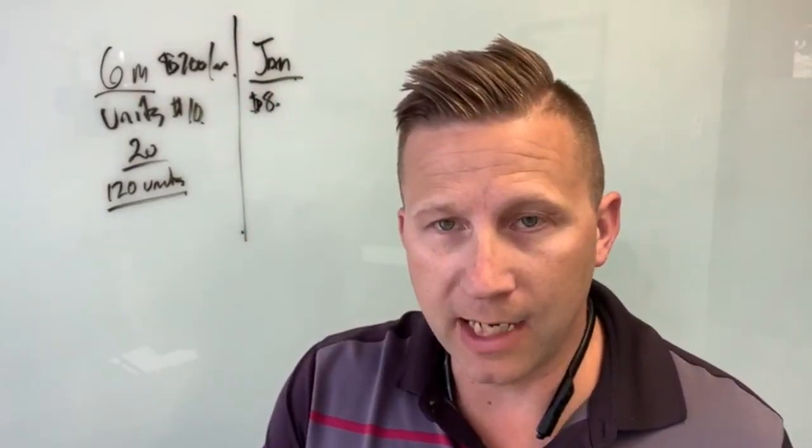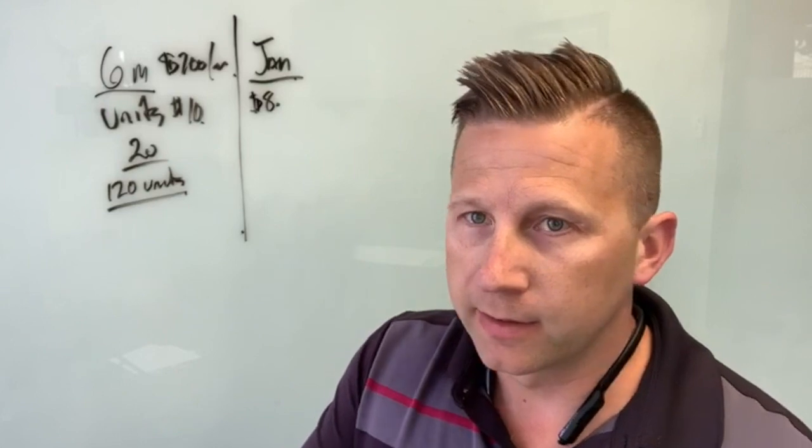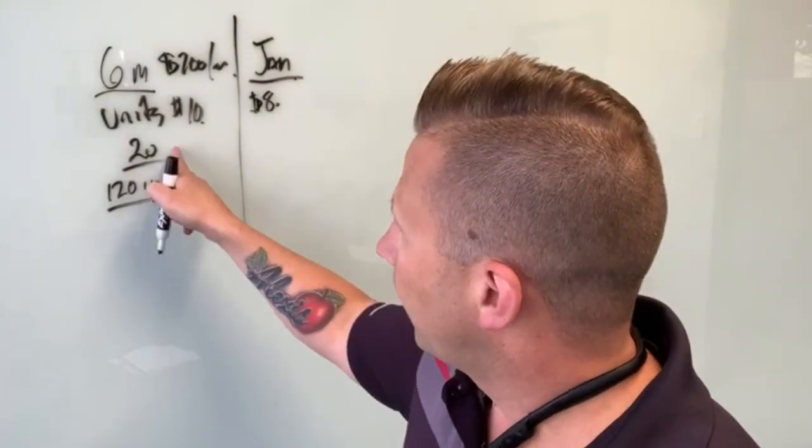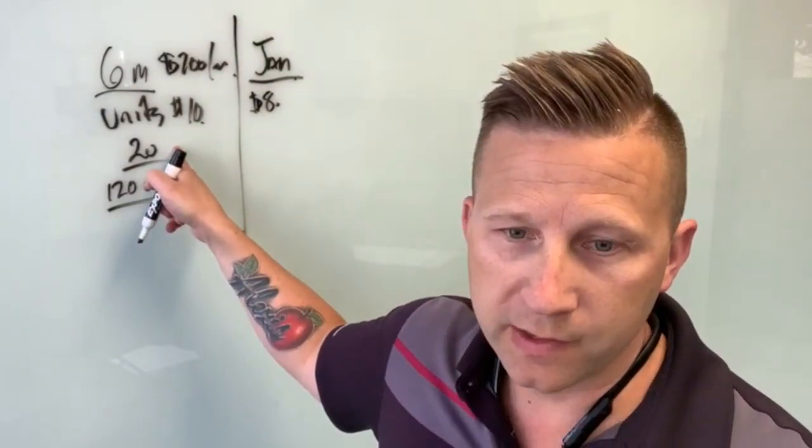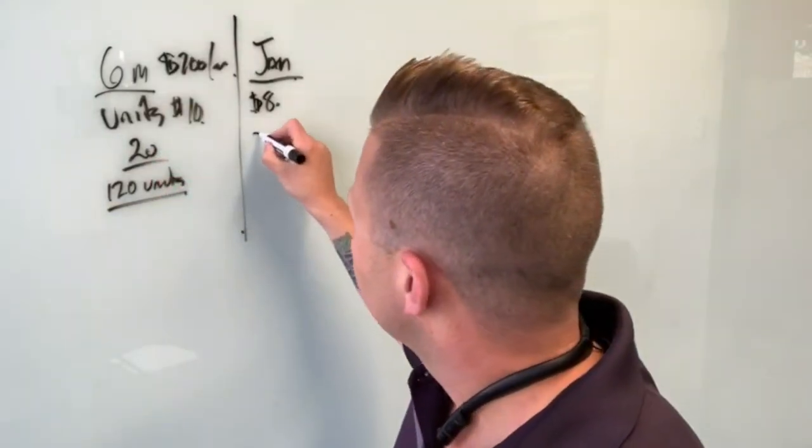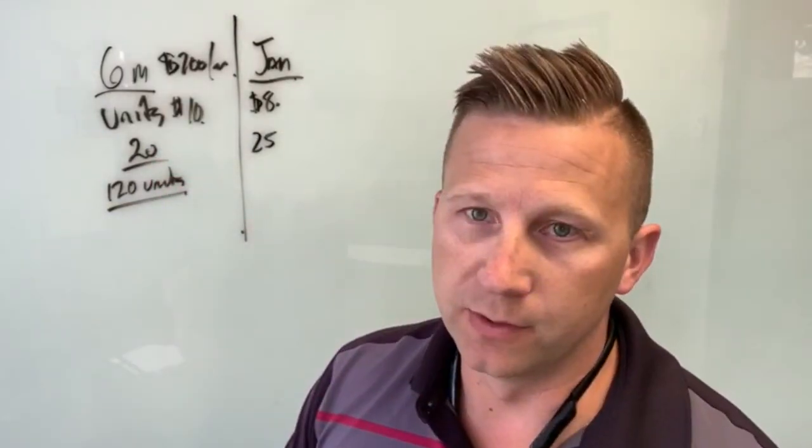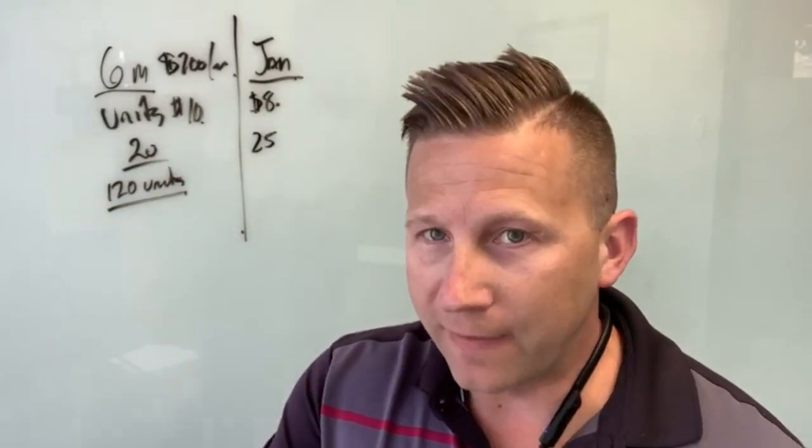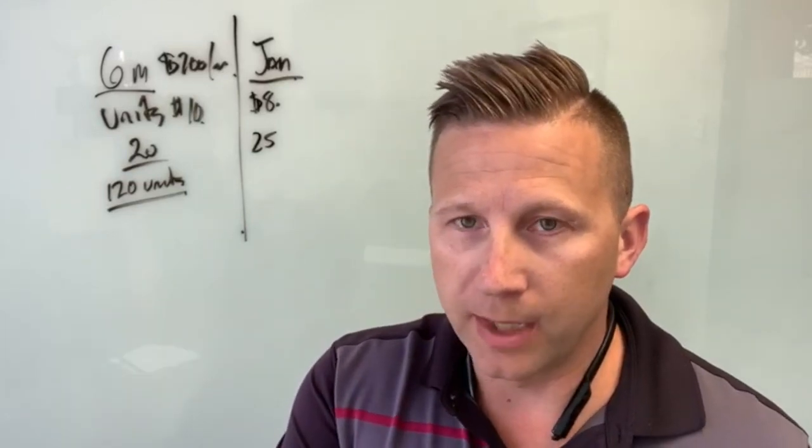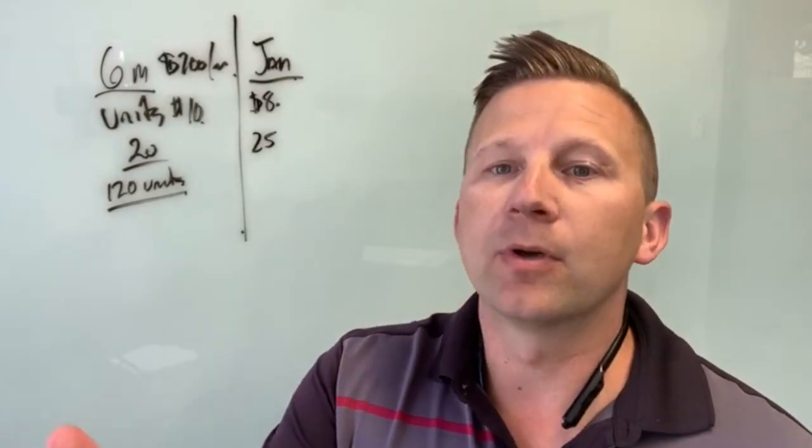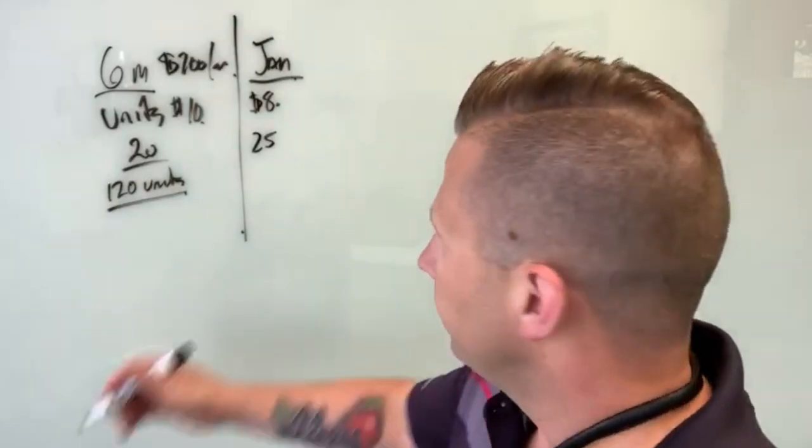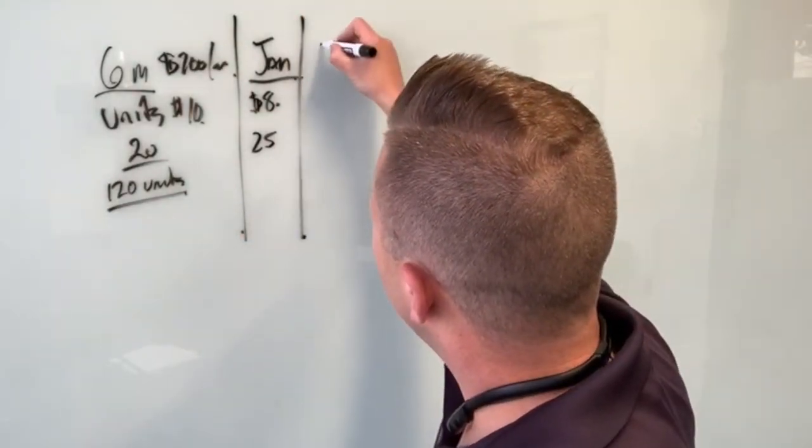Now your dollar cost averaging—you didn't change the two hundred dollars that goes in each month. So instead of buying 20 units with your two hundred dollars, you're now able to purchase 25 units with your two hundred dollars. The unit value itself is lower—it's two bucks lower—but the number of units is increasing.